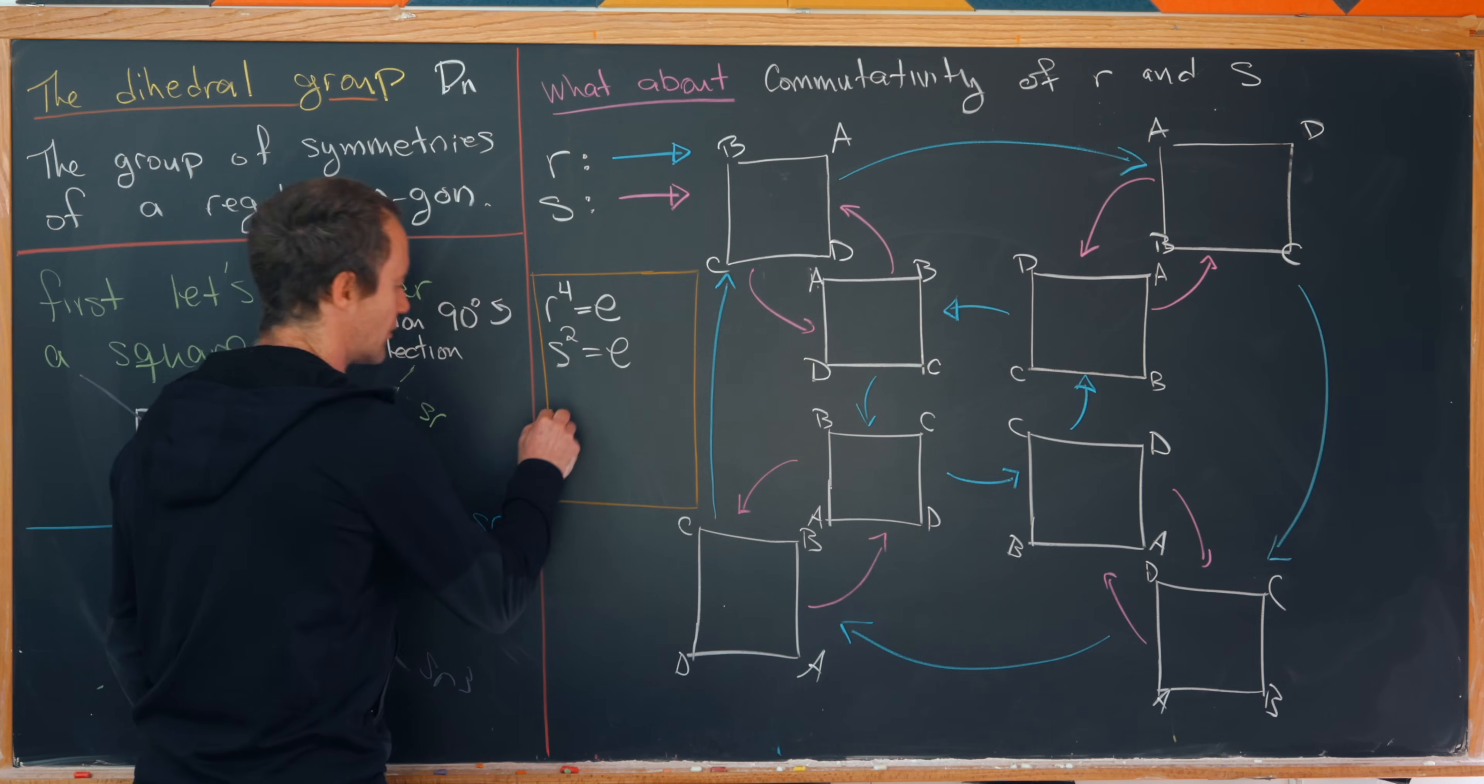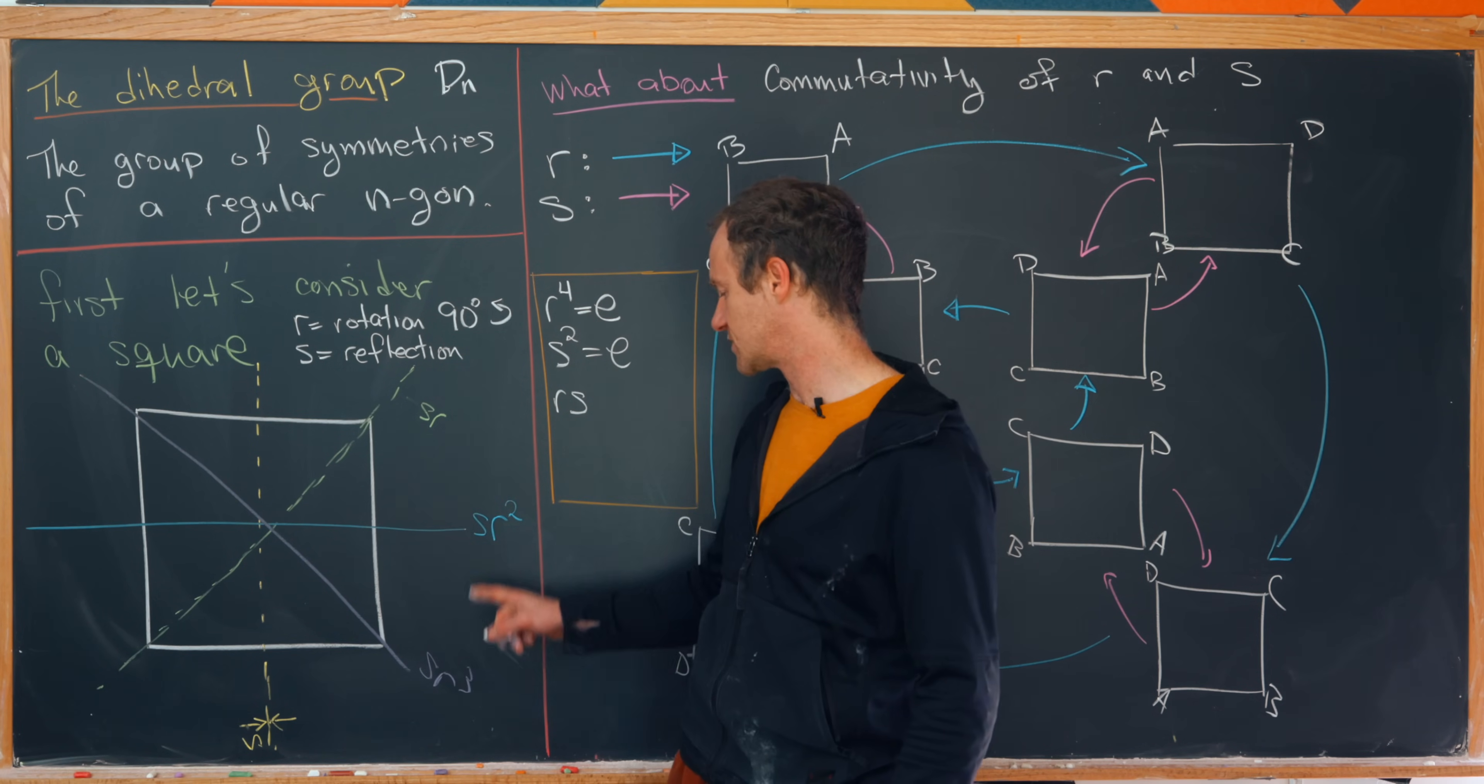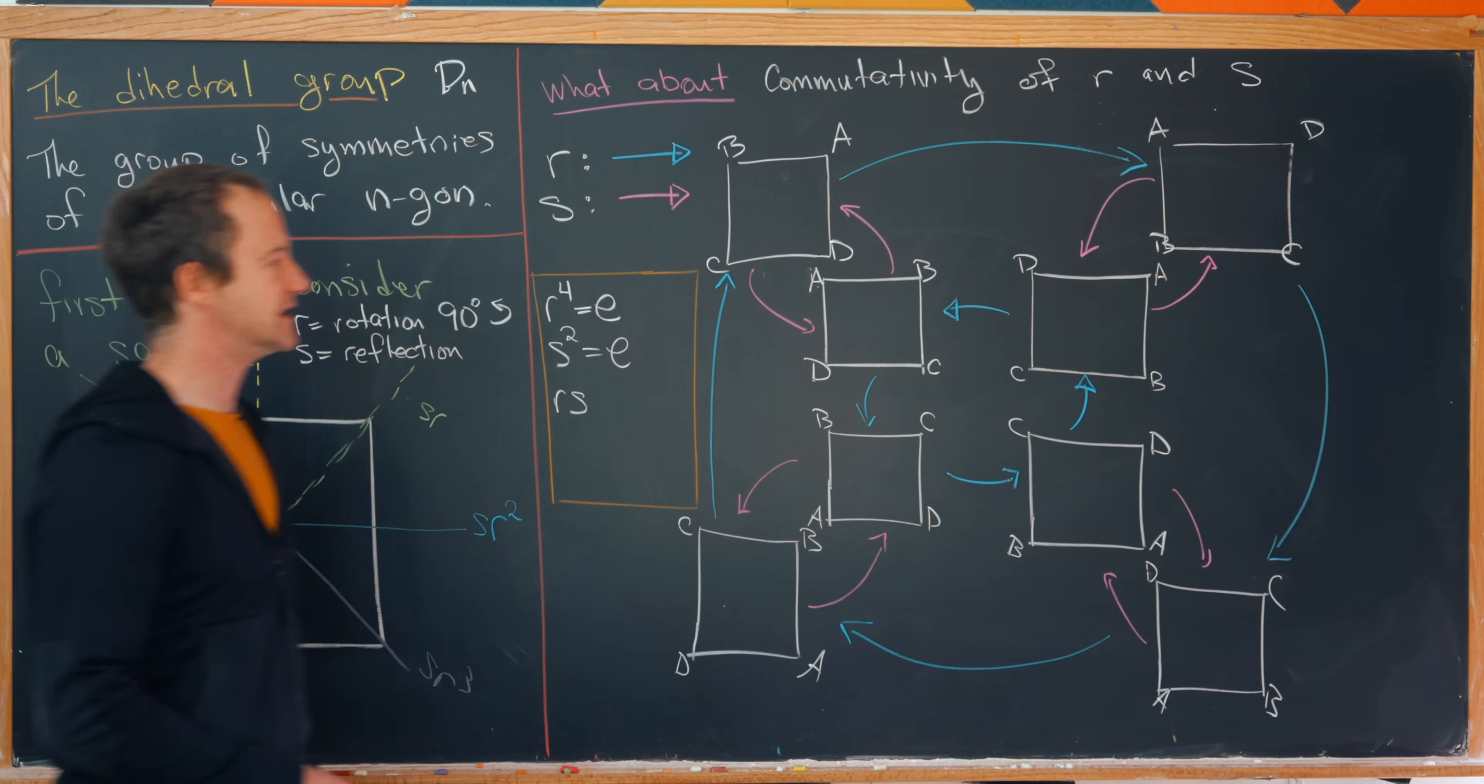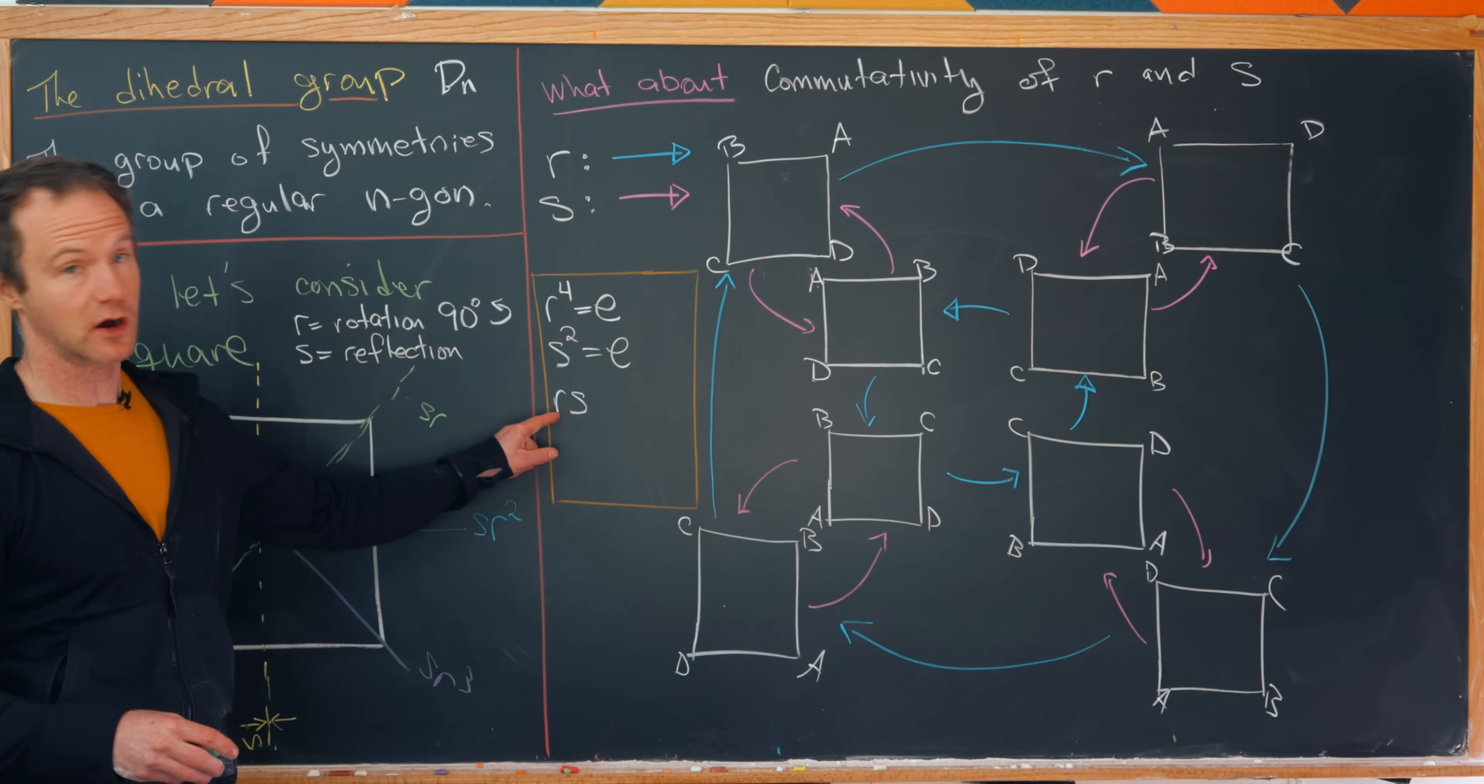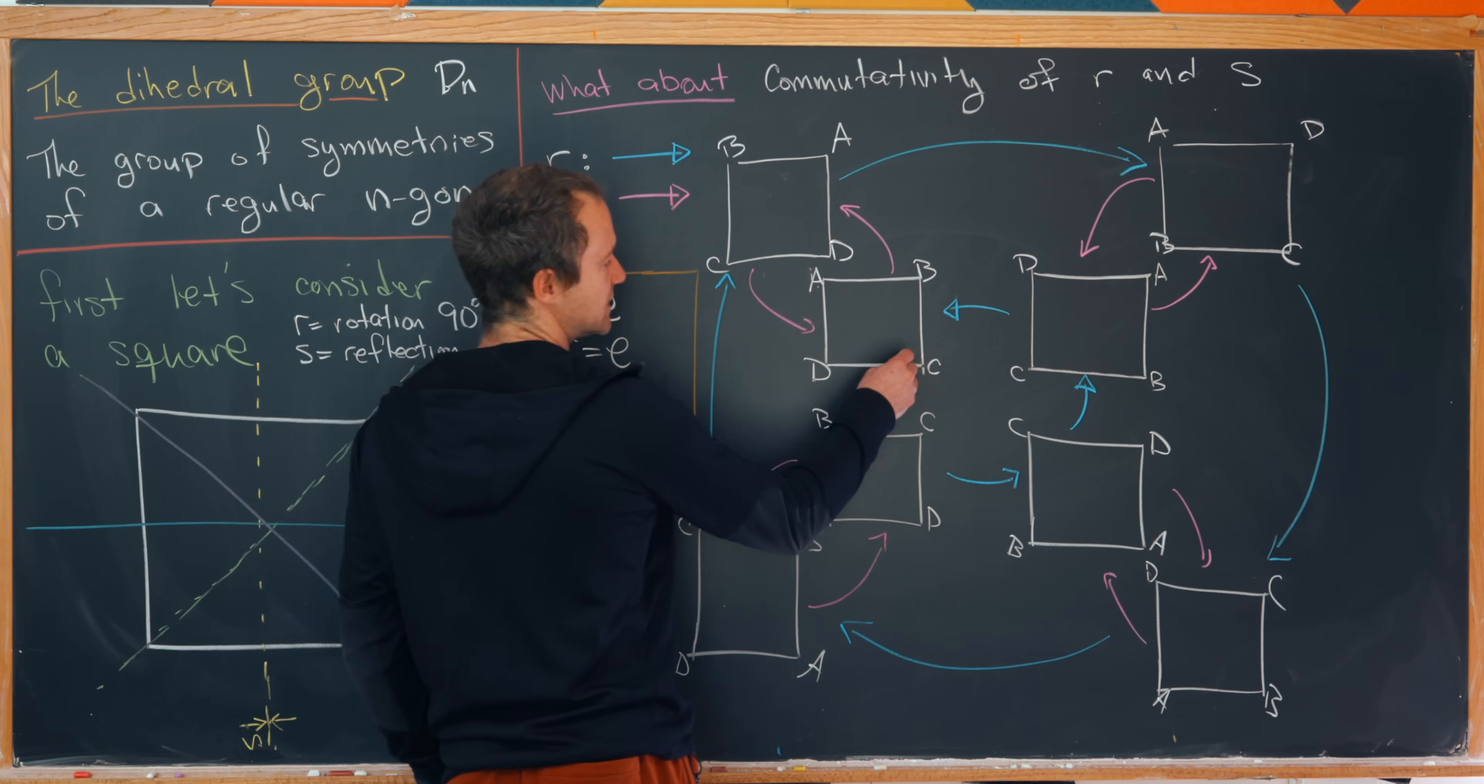But now what we'd like to calculate is what is r times s. So it's a composition of a rotation and a reflection, so it should be a reflection. But we know all of the reflections are of this form. They're either s, sr, sr squared, or sr cubed, so it should be one of those. So how are we going to figure this out? Well, I think a nice way of doing it is maybe picking one of these squares as a starting point and then going through with s first and then r because it's a function so you apply from the right, and then finding another path between the starting and the ending point.